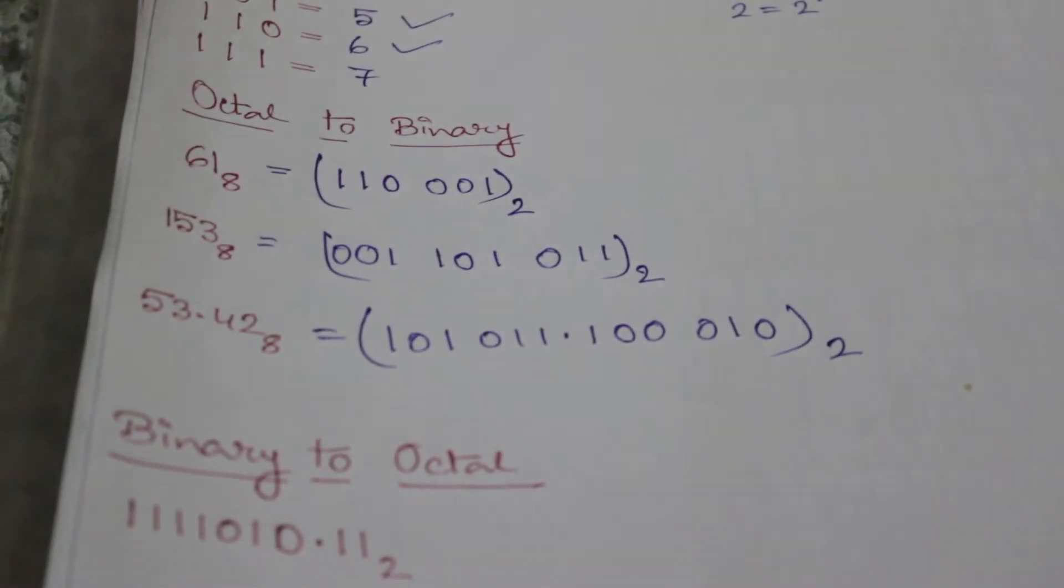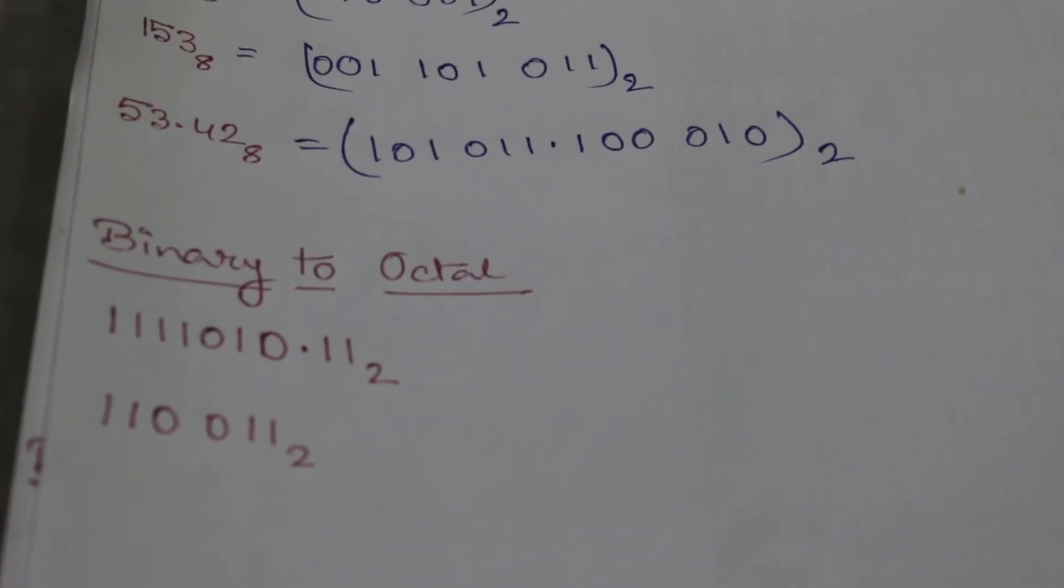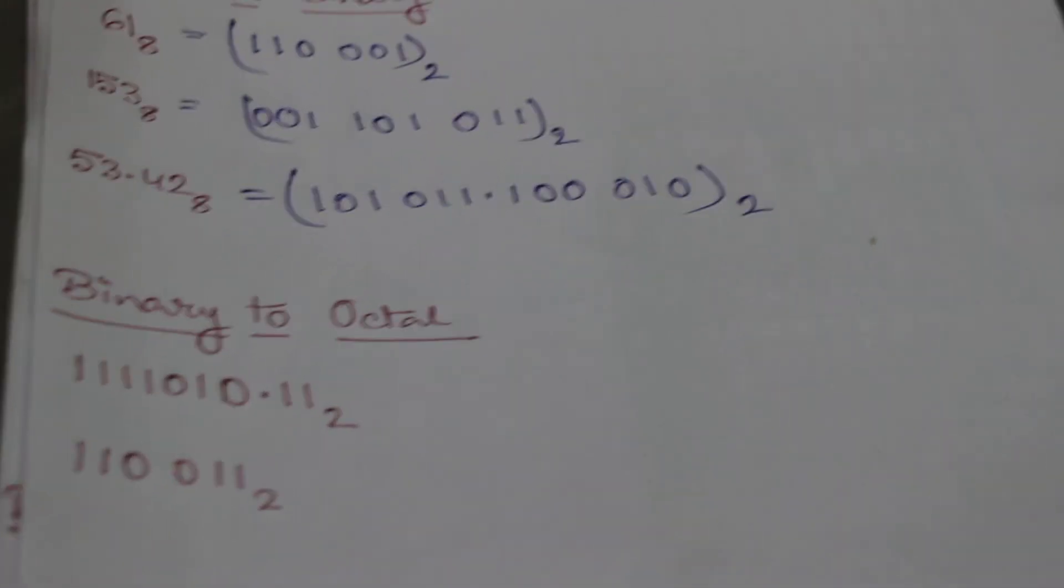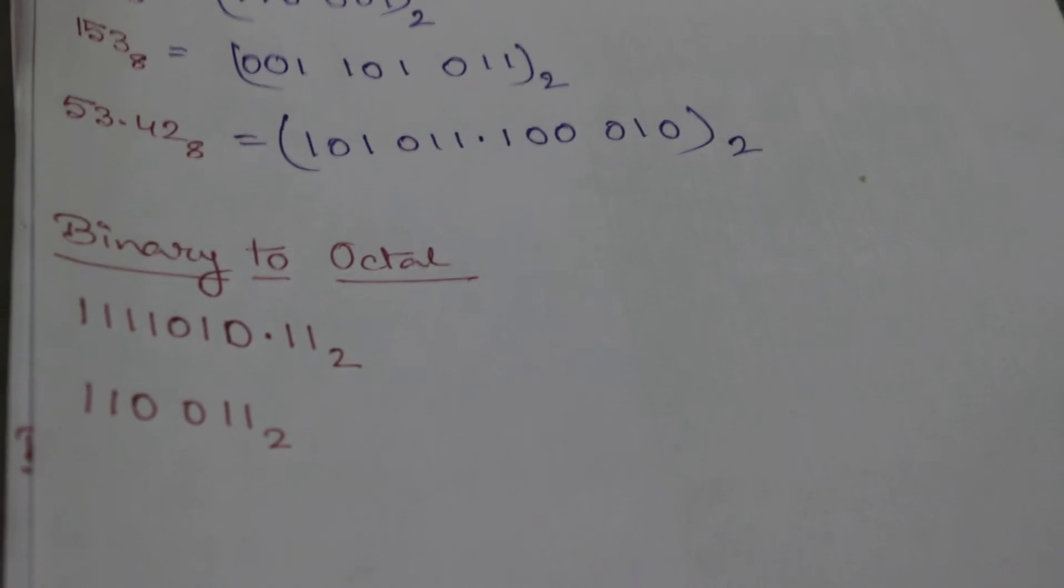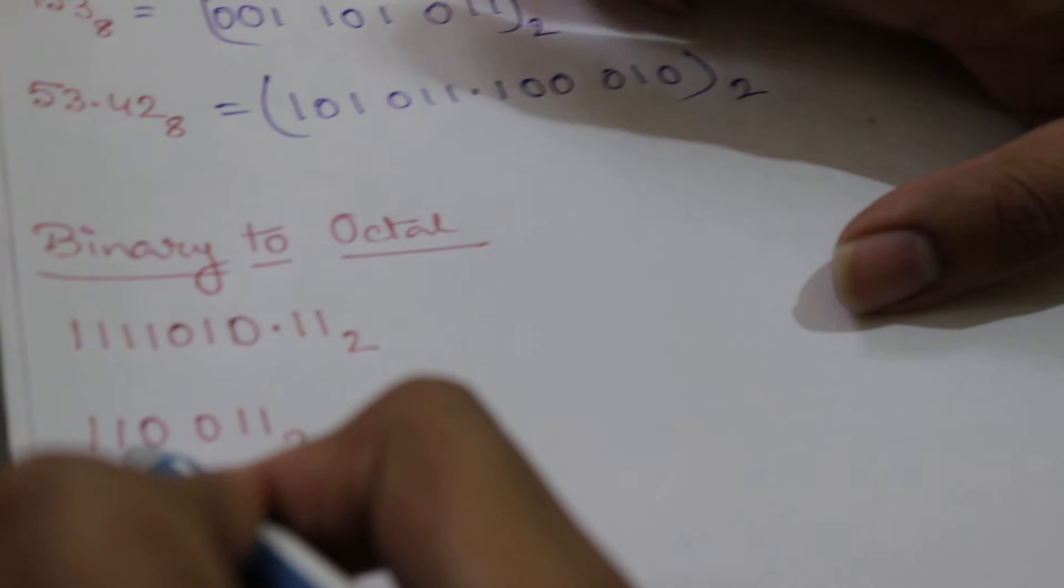Now we will convert a binary number into octal. The procedure is the same. We will divide the whole binary number in a group of three and will replace corresponding octal part.